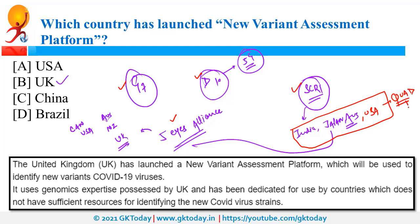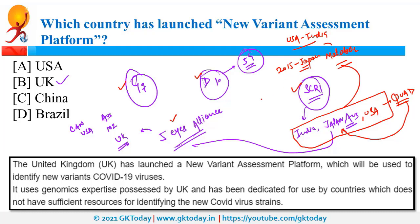The most recent meeting of Quad was held in Tokyo, Japan. All four countries participated in the Malabar exercise this year. The Malabar exercise was originally started between USA and India. In 2015, Japan joined as a permanent member, making it a trilateral exercise. In 2020, India invited Australia to join, so for the first time all Quad members participated in the Malabar exercise.